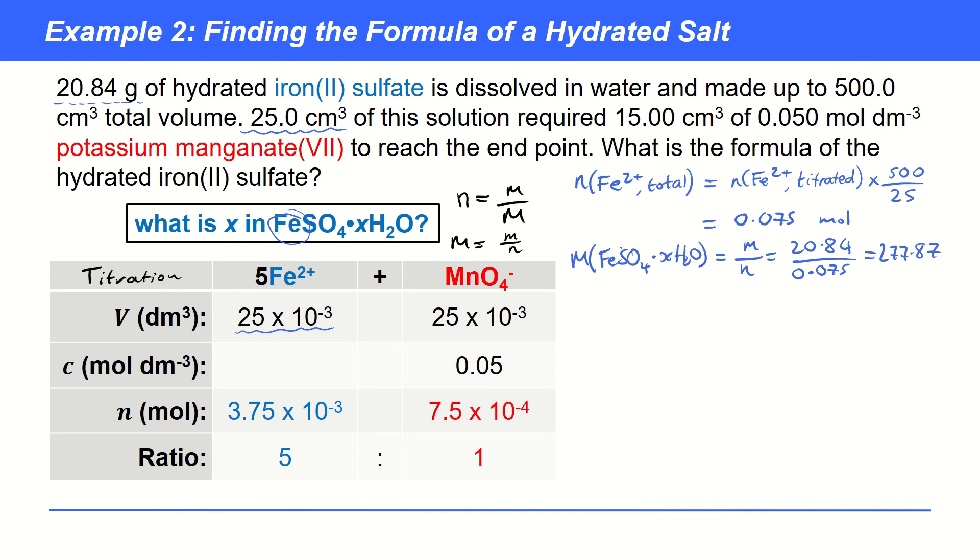So, now we know the molar mass of FeSO4. And so, we can work out the molar mass of XH2O. So, we can just do 277.87 take away 151.9, which is the molar mass of FeSO4. And we find out here that we've got 125.97 grams per mole again.